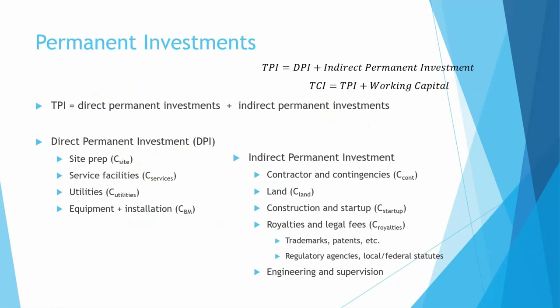Let's talk about the permanent investment again. The total permanent investment is all the stuff you put in before you start actually selling things. It's broken down into direct permanent investment plus indirect permanent investment. Direct permanent investment includes things like preparation for the site, service facilities, utilities that are going to be hooked up, installation of equipment, any equipment you have to purchase and put in directly.